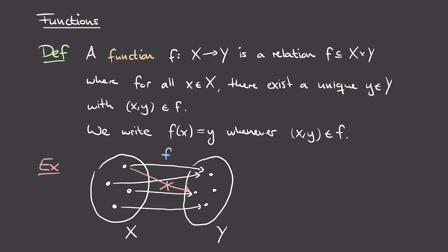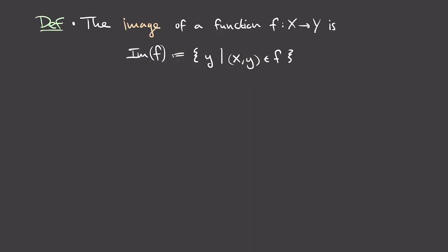Some additional terminology: X is called the domain of our function, while Y is called the codomain. These are the same terms we used for relations. Because a function is just a relation, a function also has a domain and a codomain. We now move on to defining certain properties of functions, for which we'll need the concept of an image. The image of a function is the same as for relations — it's the set of all elements y in Y such that the pair (x, y) lies in f.